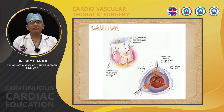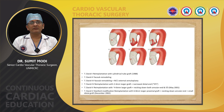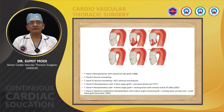Let us see certain modifications of the Tyrone David procedure. David-1, what we have described, is re-implantation with a cylindrical tube graft, pioneered in 1988. The second procedure, David-2, is the Yacoub remodeling — here, instead of re-implanting the aortic valve into the Dacron graft, one end of the Dacron graft is cut in the shape of cusps, sutured to the aortic sinuses after excising the excess sinus wall, and then left and right coronary buttons are re-implanted.